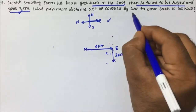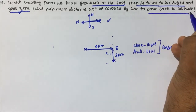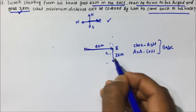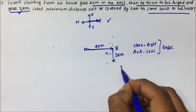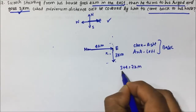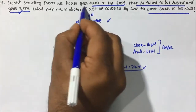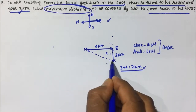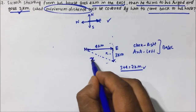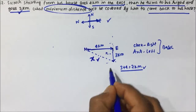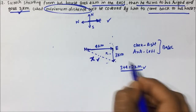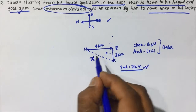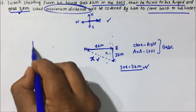Now, what minimum distance will be covered by Suresh to come back to his house? If Suresh goes back the same way, that's 3 plus 4 equals 7 kilometers. But they are asking for the minimum distance. The minimum distance will always be the straight-line distance — the direct path from his current position back to the house, which we'll call x.